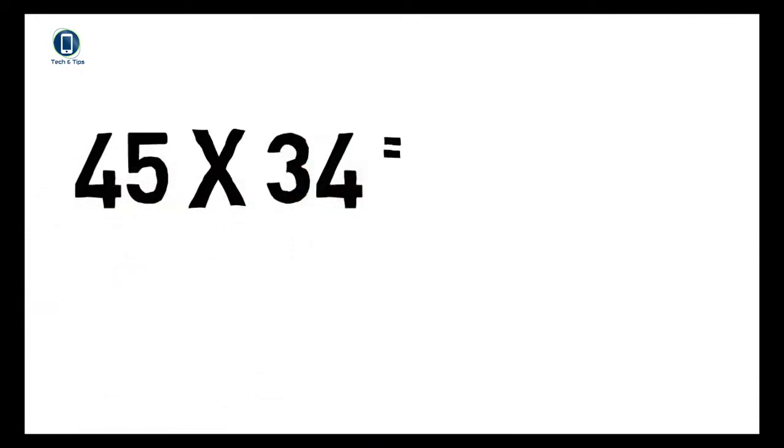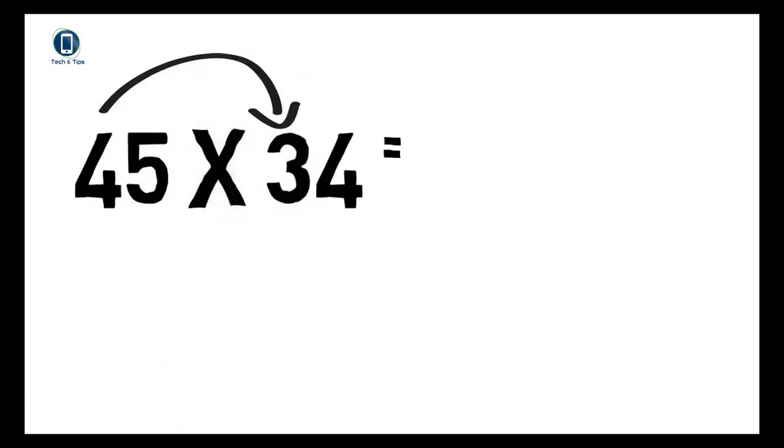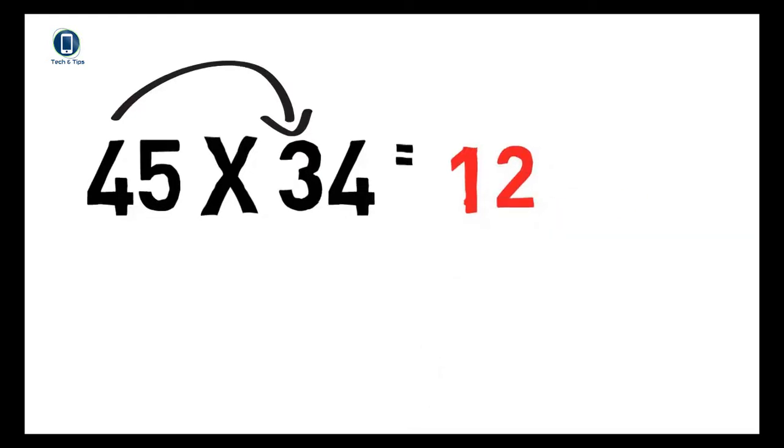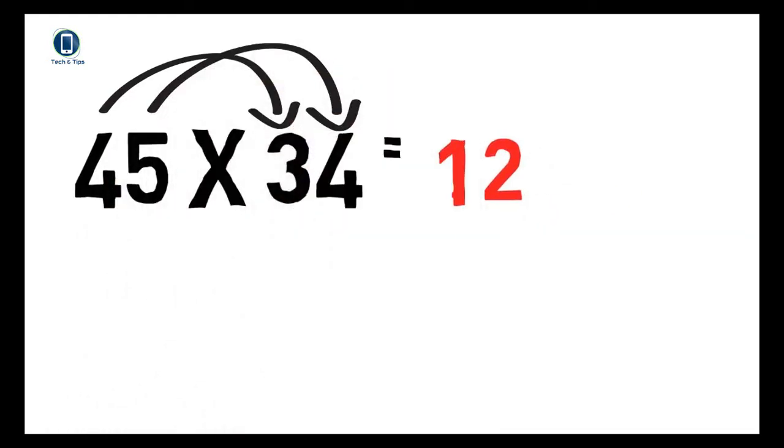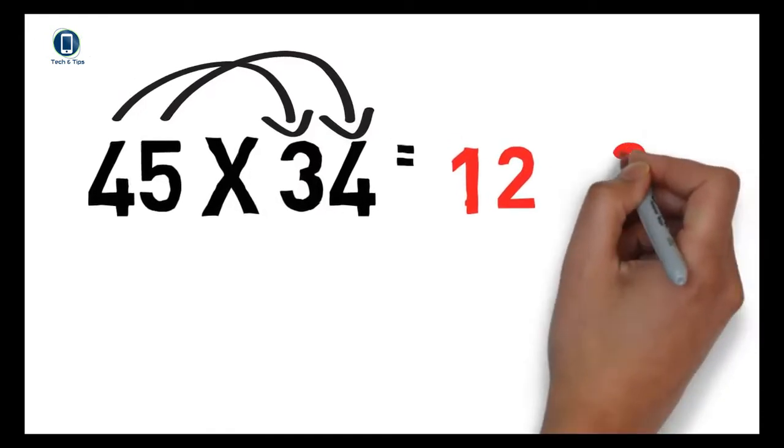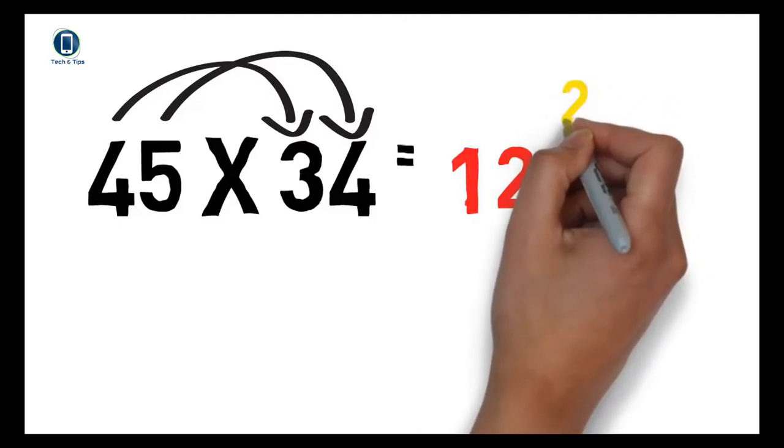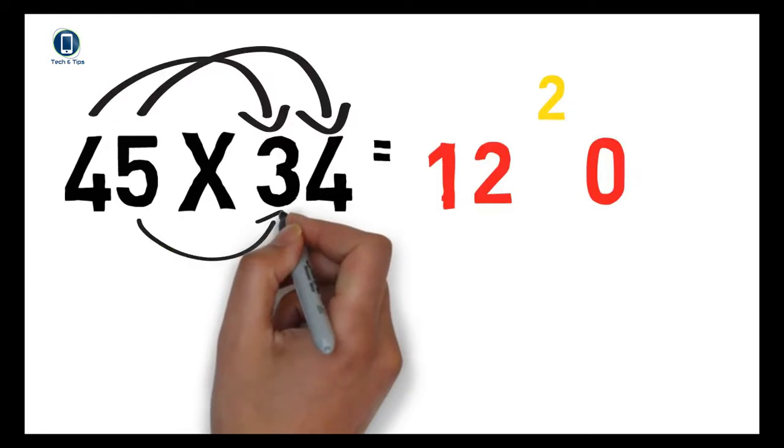Again, the same process. First digit of the first number by the first digit of the second number: 4 × 3, we write 12 in the hundreds place. Now 5 × 4, that is 20, but we write 0 and carry 2 to the next digit. Multiply both middle numbers: 5 × 3, that is 15, write 15 here. Now multiply the first and last numbers: 4